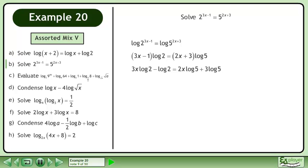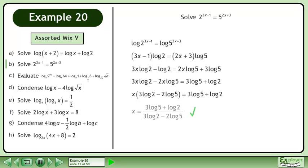Expand. Collect terms with x on the left side and constants on the right side. Factor out x. Divide to get the answer: (3 log 5 + log 2) / (3 log 2 - 2 log 5).